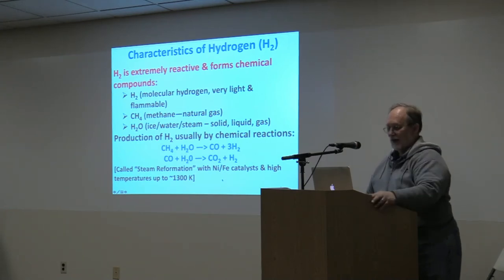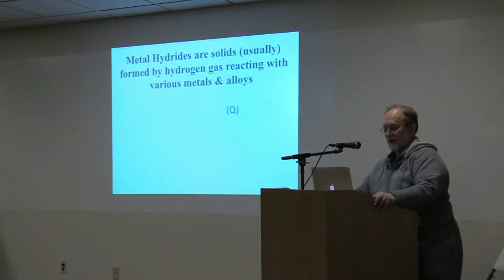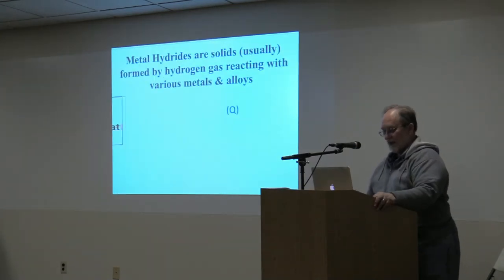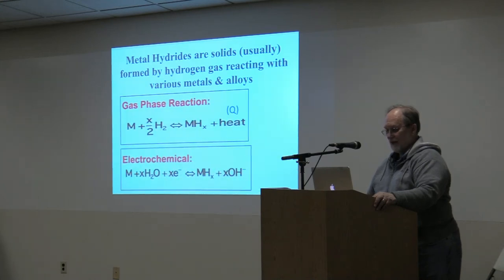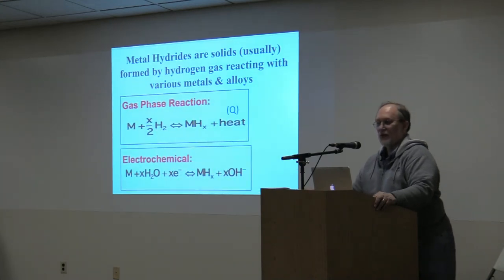You can produce hydrogen by chemical reaction. The largest method is from methane by what's called steam reformation — at high temperature with a catalyst, you make carbon monoxide and water, then carbon dioxide, and you capture the hydrogen for use in various applications.